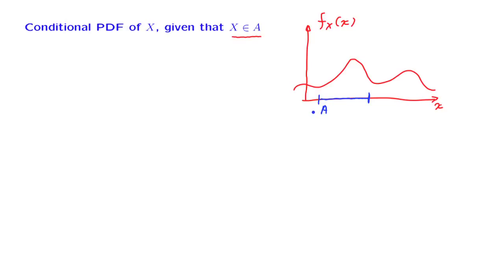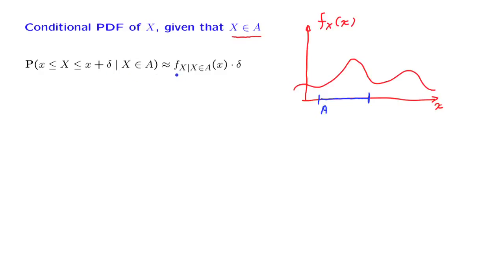We start with the interpretation of PDFs and conditional PDFs in terms of probabilities of small intervals. The probability that X lies in a small interval is equal to the value of the PDF somewhere in that interval times the length of the interval.